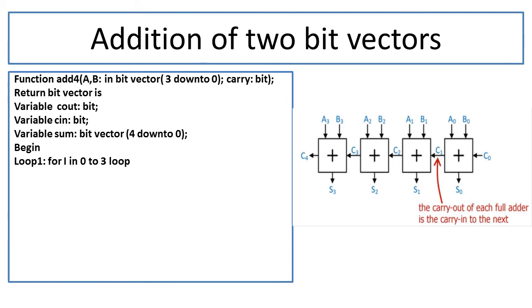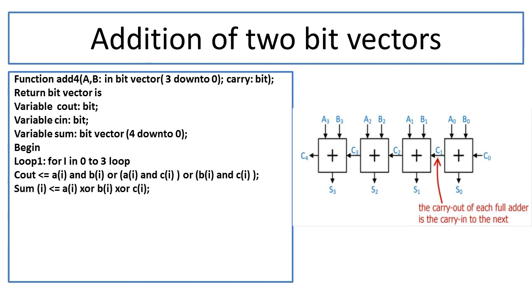After the variable declarations, we write the begin statement and initialize. We go into a loop: 'for I = 0 to 3', meaning every time it will iterate through A0/B0, A1/B1, A2/B2, A3/B3. The loop continuously executes and performs addition. First we generate the carry: the full adder carry expression is C = AB + BC + AC, so we write: C_out = (A(I) and B(I)) or (A(I) and C(I)) or (B(I) and C(I)). Then we define the sum which is given as A XOR B XOR C: sum(I) = A(I) xor B(I) xor C(I). As I varies from 0 to 3, every loop iteration generates a C_out value and a sum value.